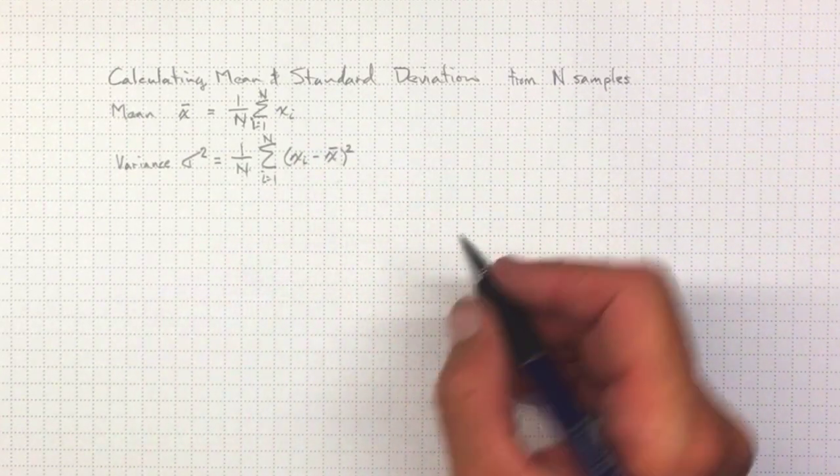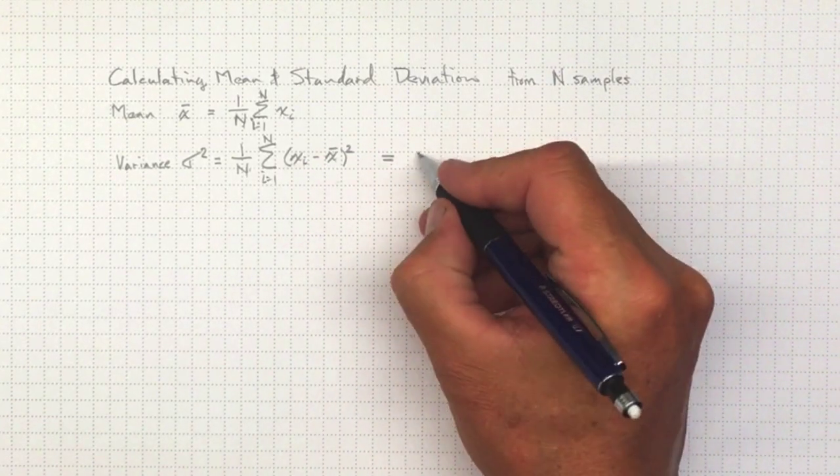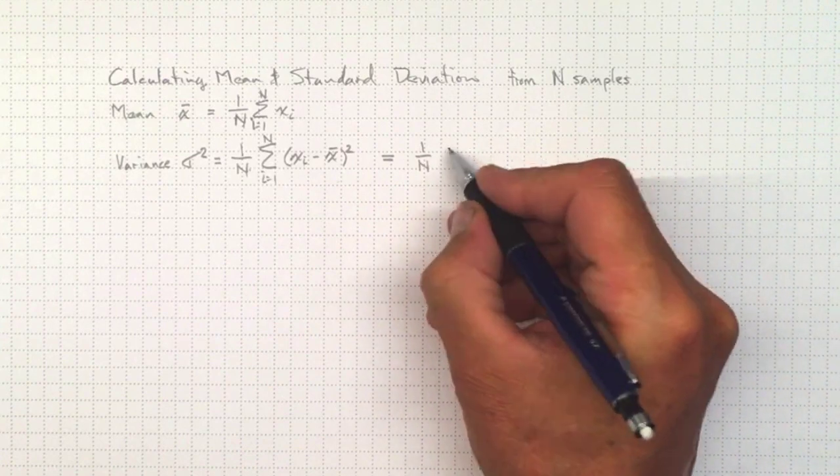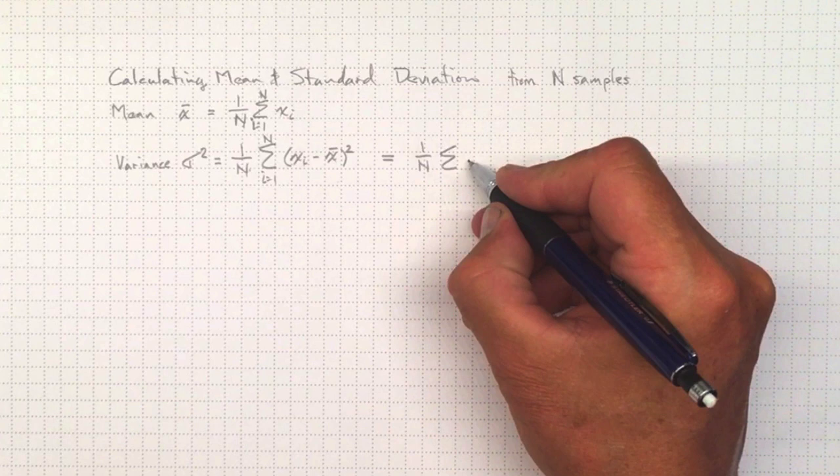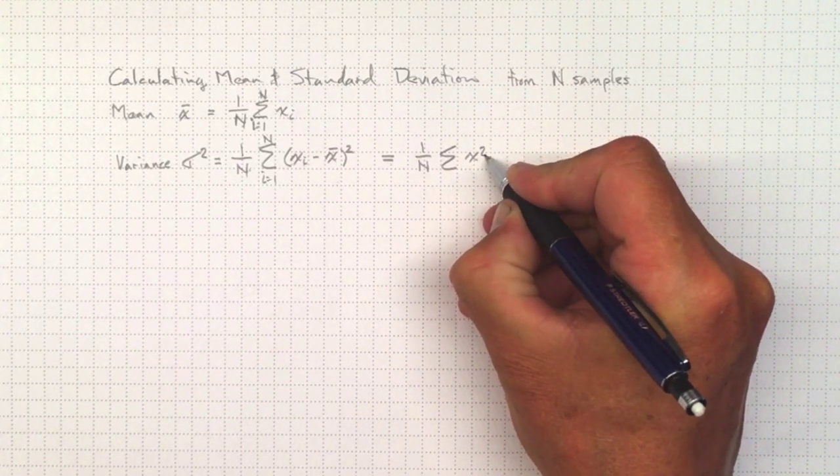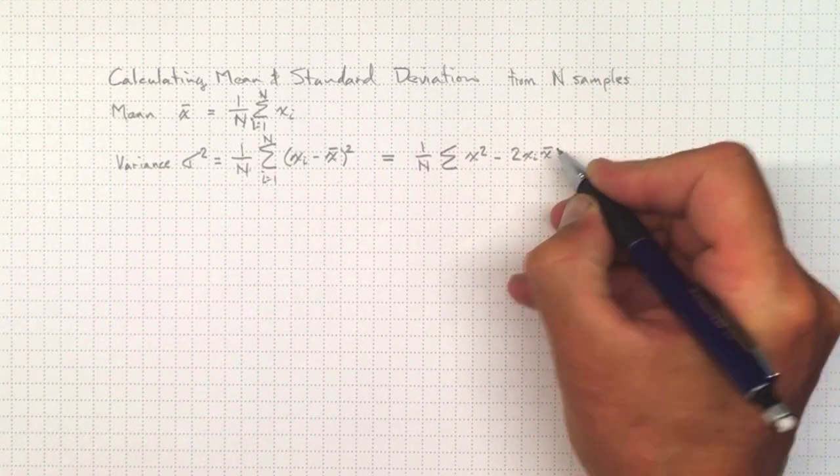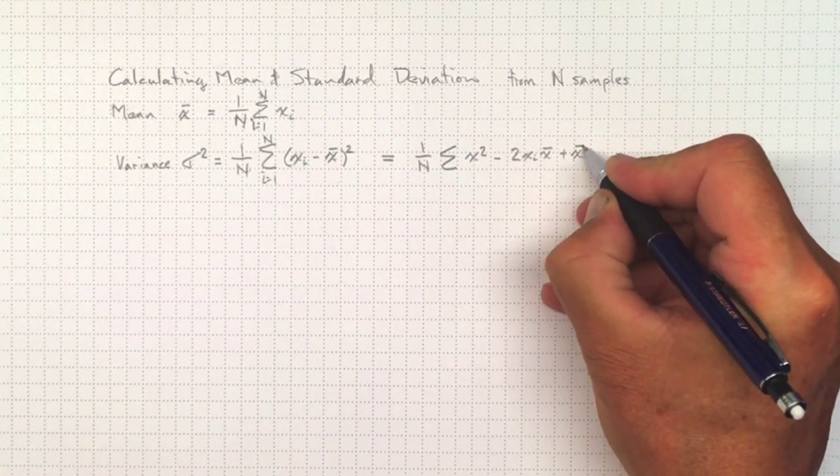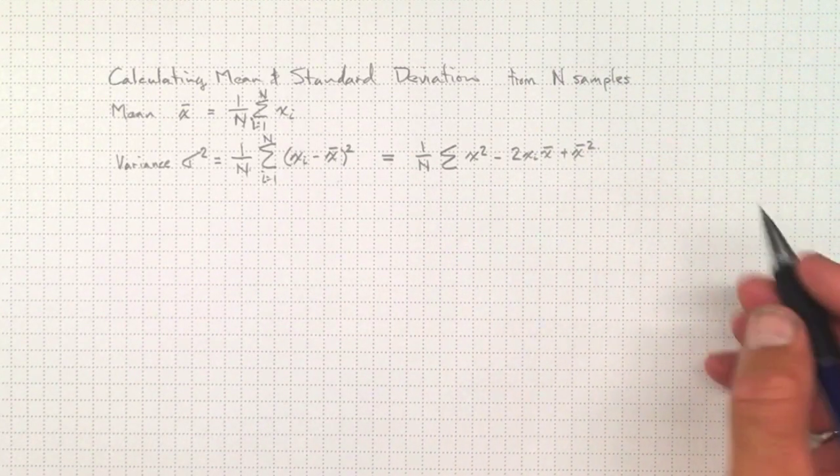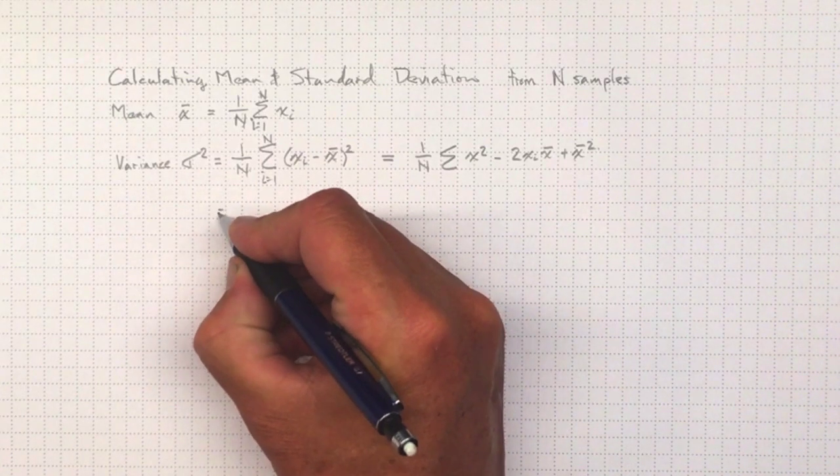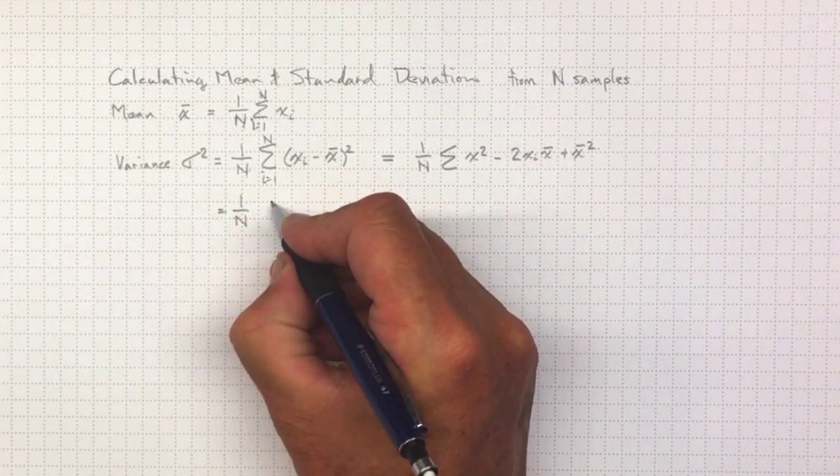When you add those up, we could do that square inside the summation, and we get 1 over n times the sum. I'm going to drop these indices here just for ease of writing. That gives us xi² minus 2xi x̄ plus x̄².